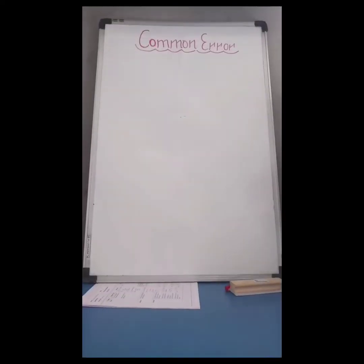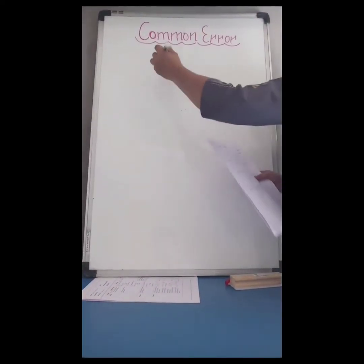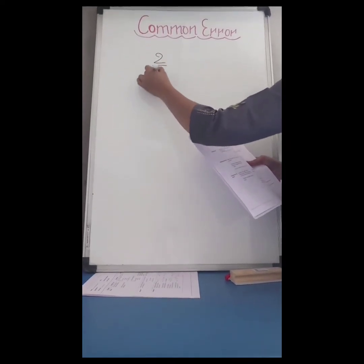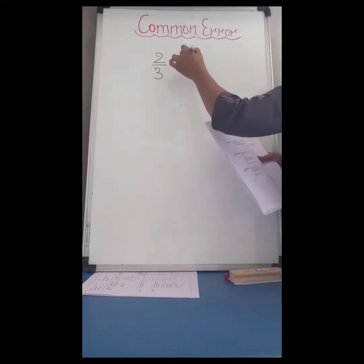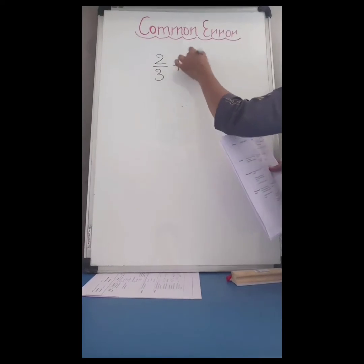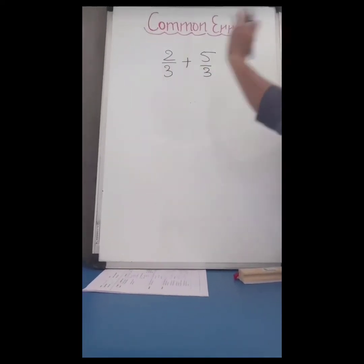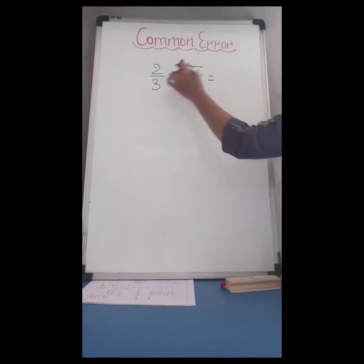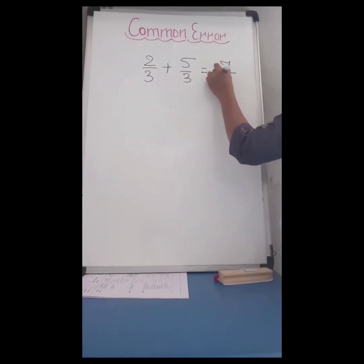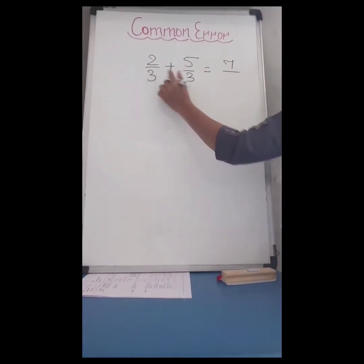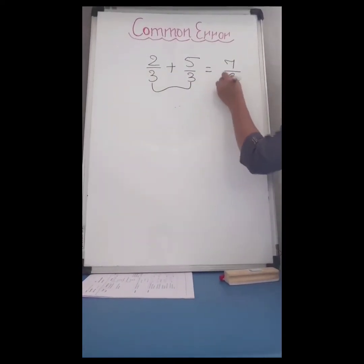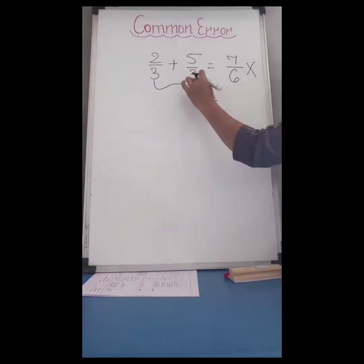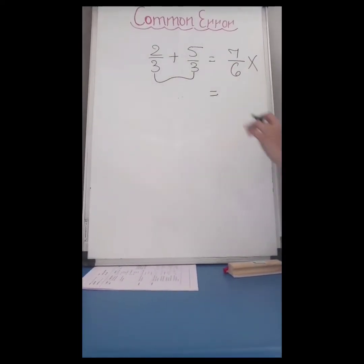Another mistake occurs in fractions. For example, 2 upon 3 plus 5 upon 3 — these are like fractions. But what mistake do students make? They add 2 plus 5 to get 7, and then they also add the two denominators together, which is wrong. We will never add the denominators.